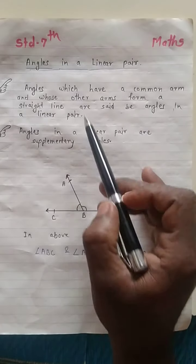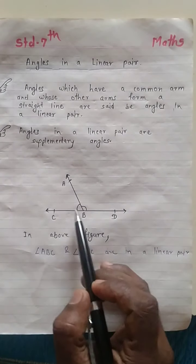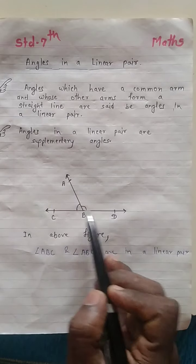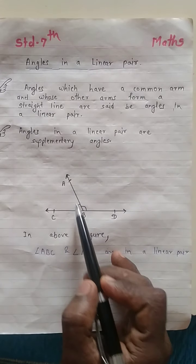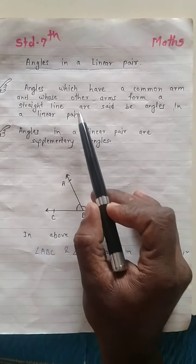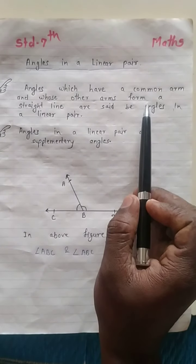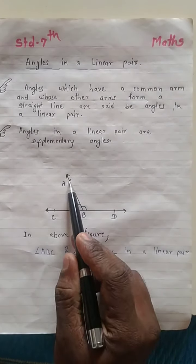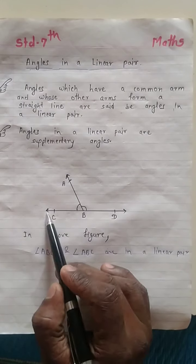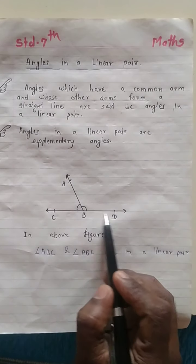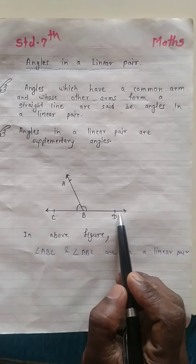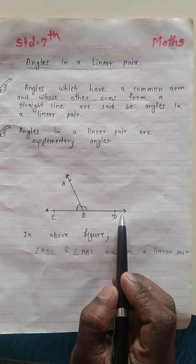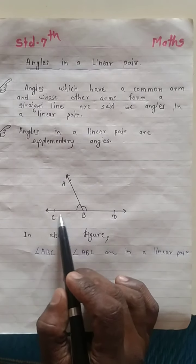Angle ABC and angle ABD have BA as the common arm. Then, whose other arms form a straight line — one arm is BC, and the other arm is BD. So these two arms are the other arms that form a straight line.